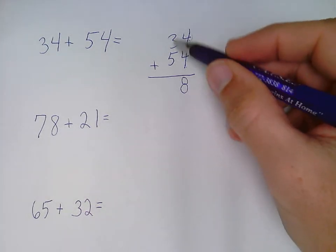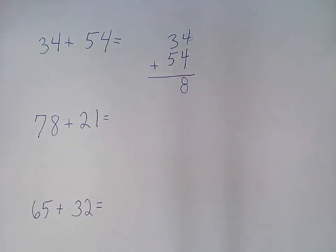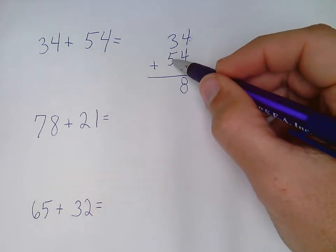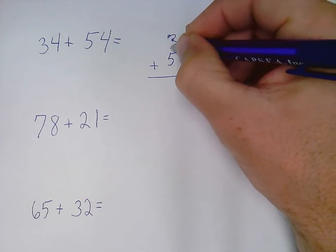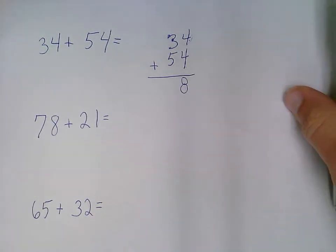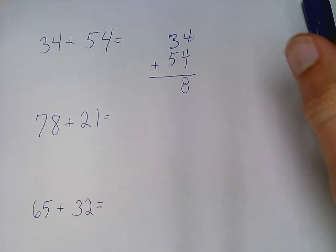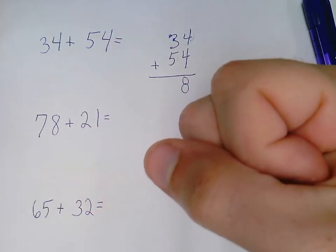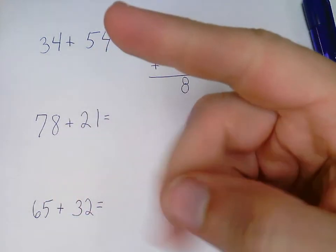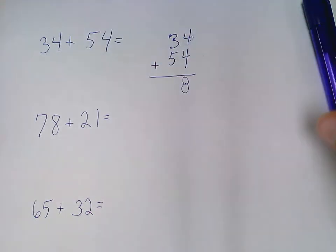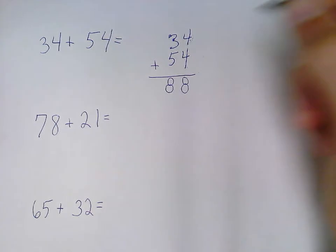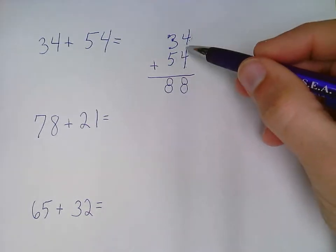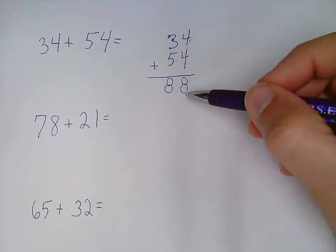I do the same thing in the other column. I have 3 plus 5. I can use my touch dots or my fingers. 5, 6, 7, 8 with my touch dots, or with my fingers, I grab the big number, I grab the 5: 6, 7, 8. So 3 plus 5 is 8. And now there's my answer. 34 plus 54 equals 88.